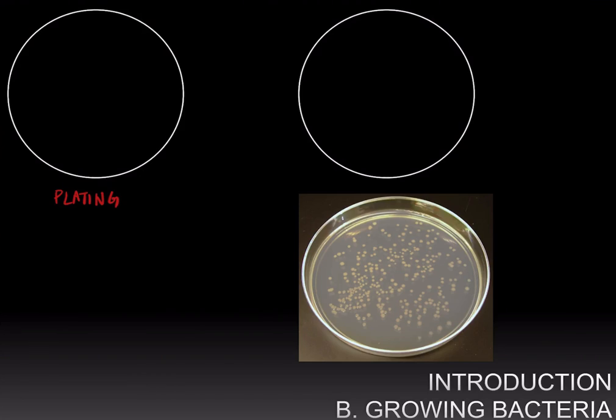In plating, you take a solution of bacteria and you dilute it down. So let's say you have only about a hundred cells and you apply, pour or spread the solution on an agar plate. It's a petri dish, a plastic plate in which you have agar that contains a growth medium for the bacteria. Plating this dilute solution of bacteria means that individual bacterial cells will be isolated from each other.